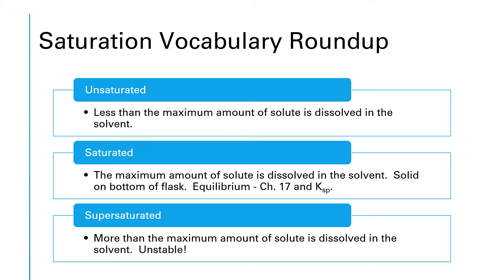To put all of that into writing: an unsaturated solution is one where less than the maximum amount of solute has been dissolved into your solvent. A saturated solution is one that has the maximum possible amount of solute dissolved, and we typically demonstrate this by leaving some undissolved solute on the bottom of the flask. We'll study this quite a bit more in chapter 17 when we're looking at equilibriums and KSPs. And then a supersaturated solution is a very unstable scenario where you have tricked the solution into dissolving more solute than it should be able to dissolve under the current conditions. This is unstable and probably won't be the answer to any sort of a question unless something in the statement of the question demonstrates that the solution was heated up to trick extra solute into dissolving.